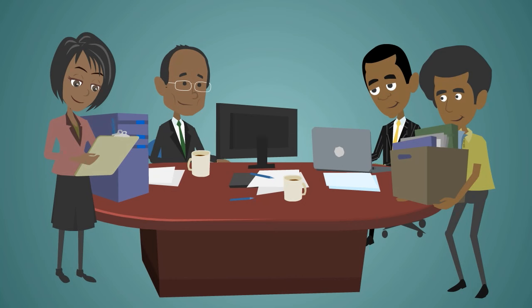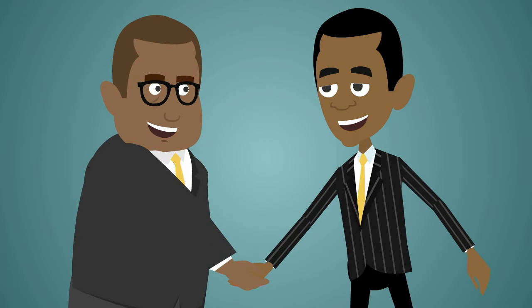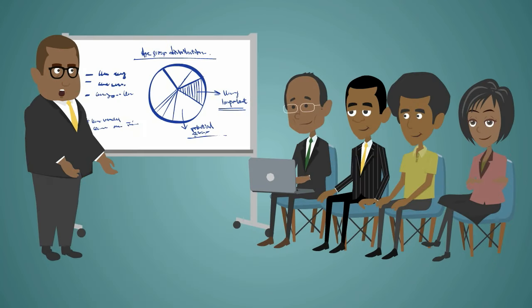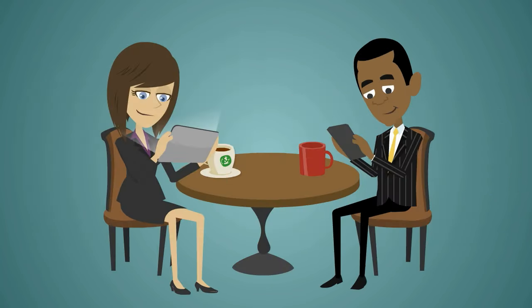Accounting systems may be developed in-house by the organization using it, or it may be purchased from a third party like Attache, or it can be a combination of a third party application software package with local modifications. Accounting software can also be online-based, which means it can be accessed anywhere with any internet-enabled device.